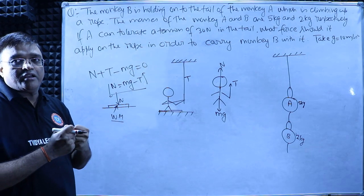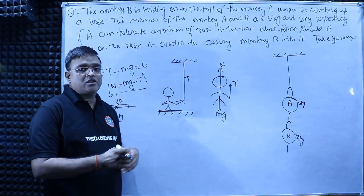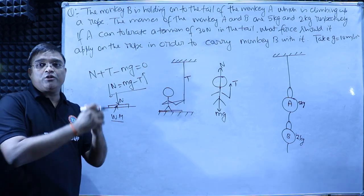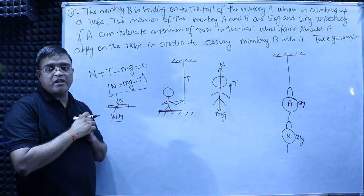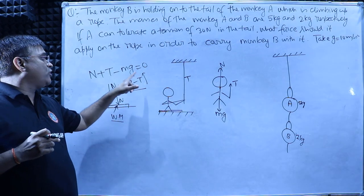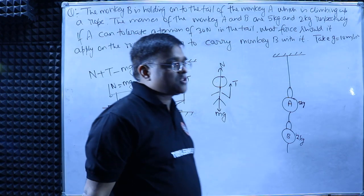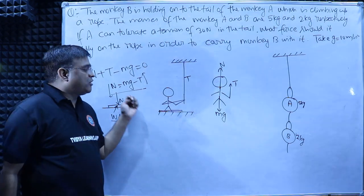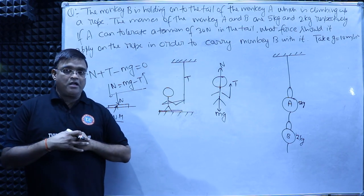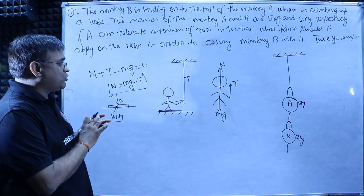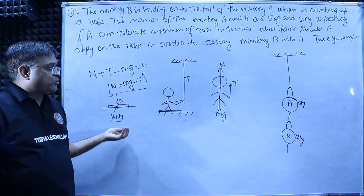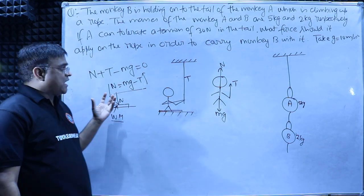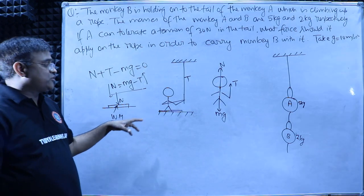As you pull the rope harder and harder, your interaction with the surface gets weaker and the normal reaction falls. When you pull the rope with a force equal to your weight, the tension equals your weight and the normal reaction becomes zero. You are about to leave the surface and start climbing.